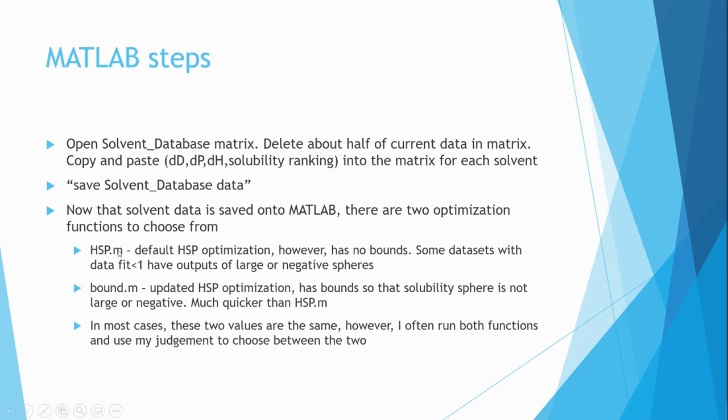Now that the solvent data is saved onto MATLAB, there are two different optimization functions to choose from. One is HSP.m, and that is the default HSP optimization from Gharaghese. However, this has no bounds, and so some data sets with a data fit less than one will be huge, like with the radius of 50, or they will have negative HSP values, which you don't want. So I created a slightly altered version, which I call bound.m, which uses a very similar penalty optimization. However, it does have bounds so that the solubility sphere is not large or negative, and it's also much quicker than the HSP algorithm.